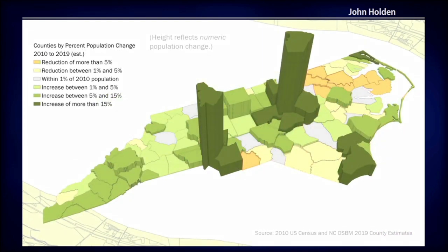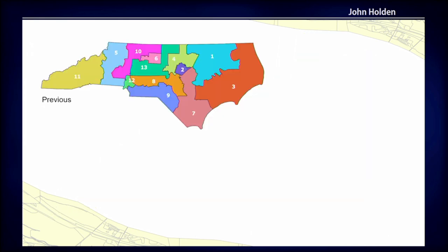The shades represent the percent change in population. In this slide, the height of the extruded prisms represents the actual numeric magnitude of change. You can see there are two counties — Mecklenburg County and Wake County, where Charlotte and Raleigh are located — that had exceptional growth, over 20%. The distribution of population change is very unequal, which brings about the challenge of redrawing districts so that each area contains the same number of people.